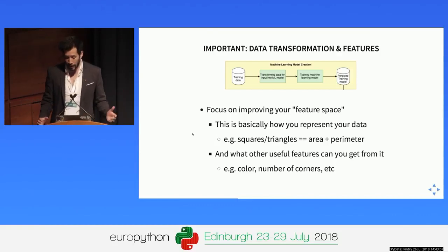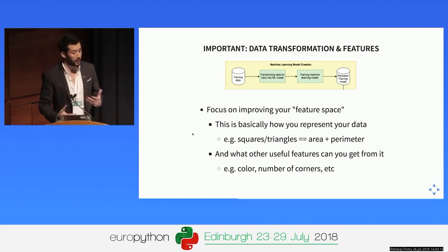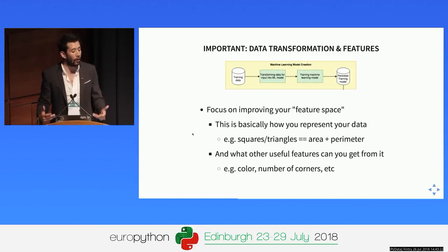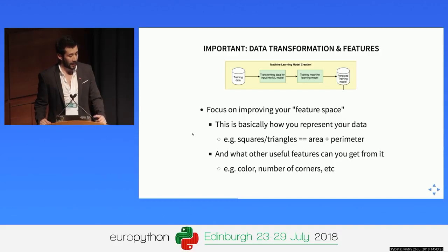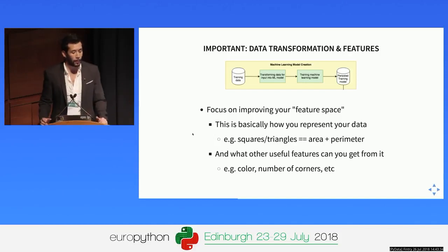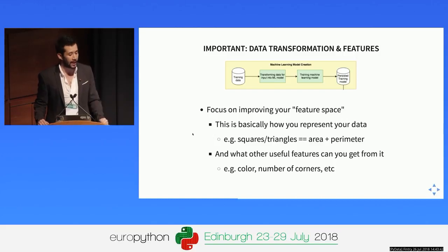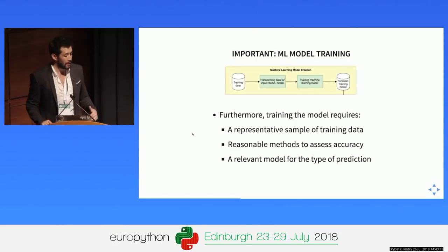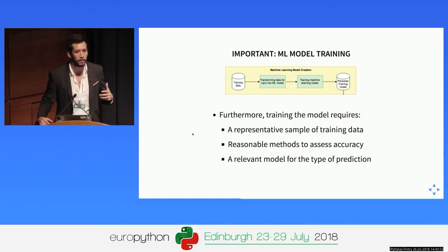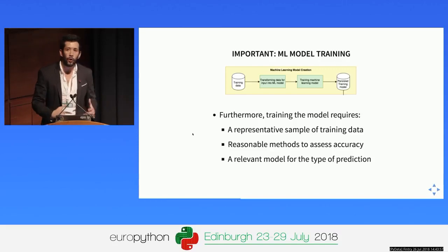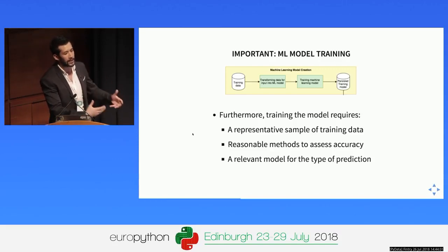The most important parts in this process are transforming your data into features and training the model itself. You need to focus a lot on your feature space — finding new ways to represent the incoming data. In the squares-and-triangles example, the features were area and perimeter, but we could also think of color, number of corners, et cetera. The second critical thing is the actual training: making sure you have a representative amount of data and that your model is the right one for the complexity of the problem. For example, with something as complex as cryptocurrency data or text, even a million examples might not be enough to extract the abstractions of language — which is why you'd benefit from something like Word2Vec, which trains on the entire Wikipedia.